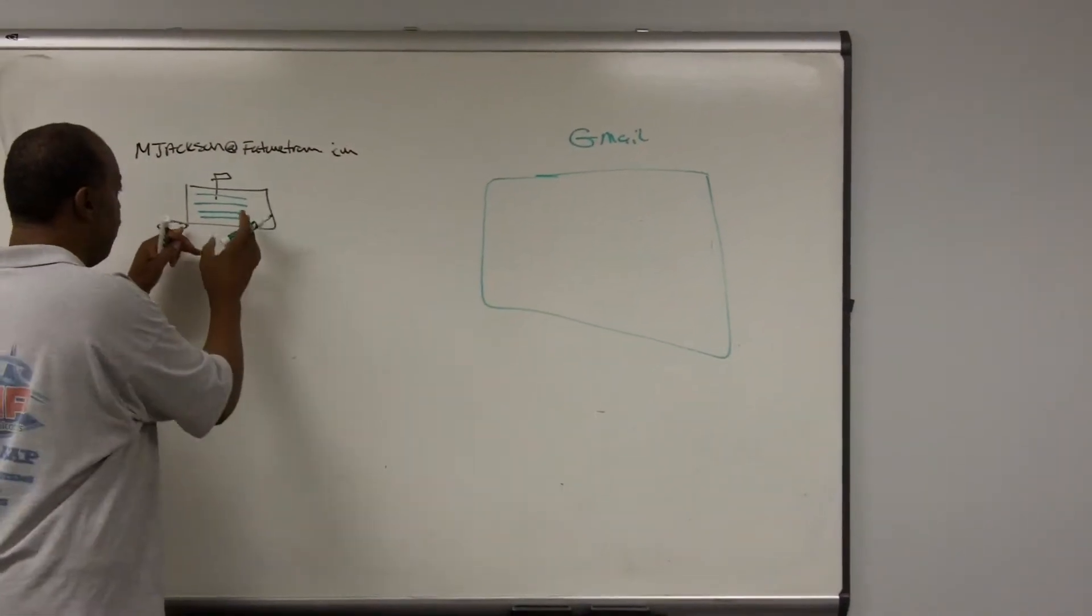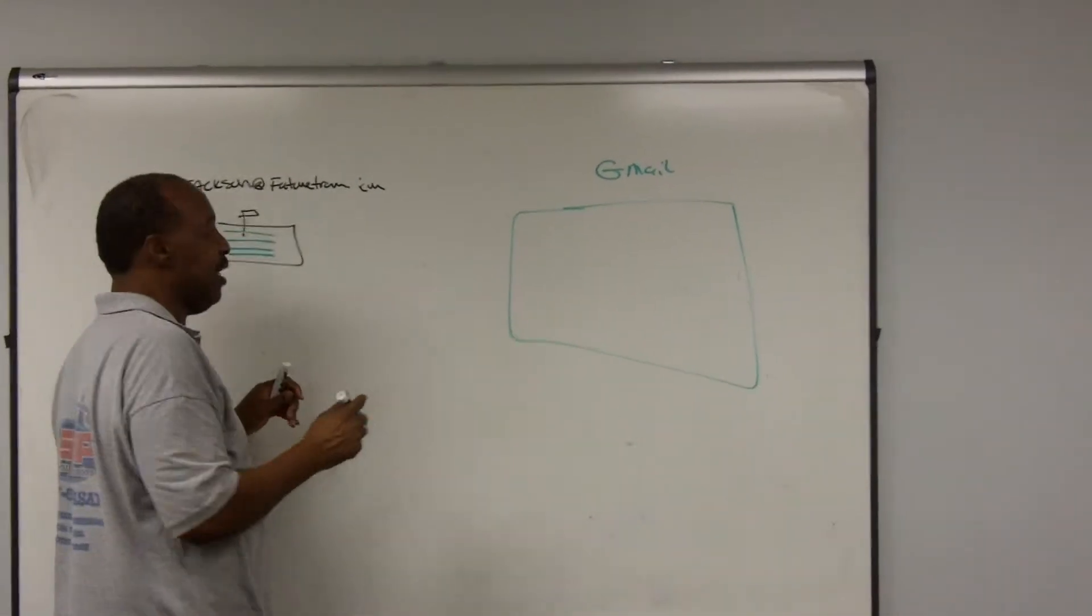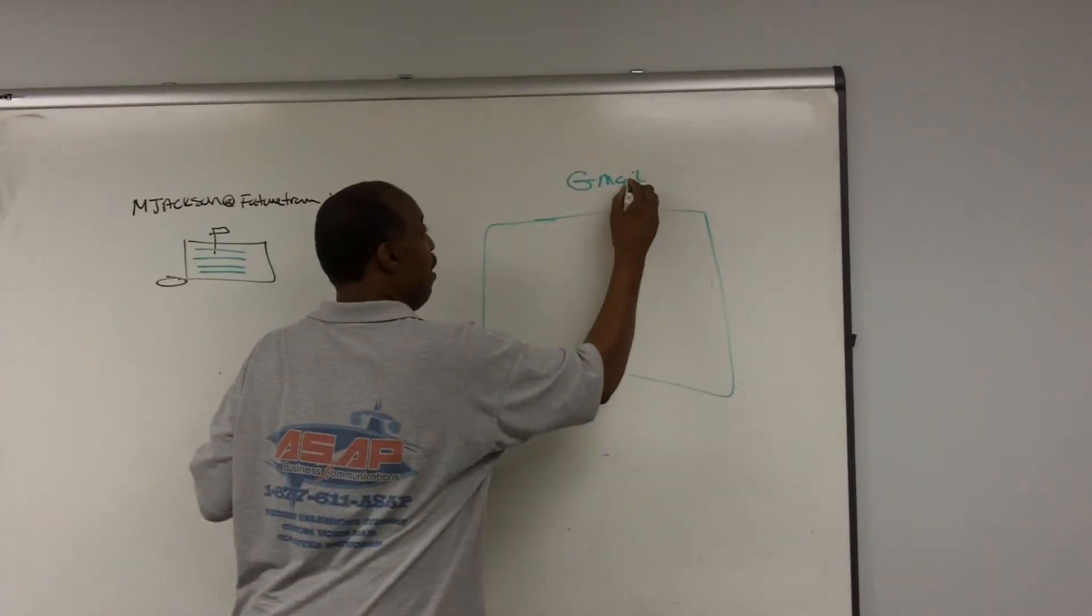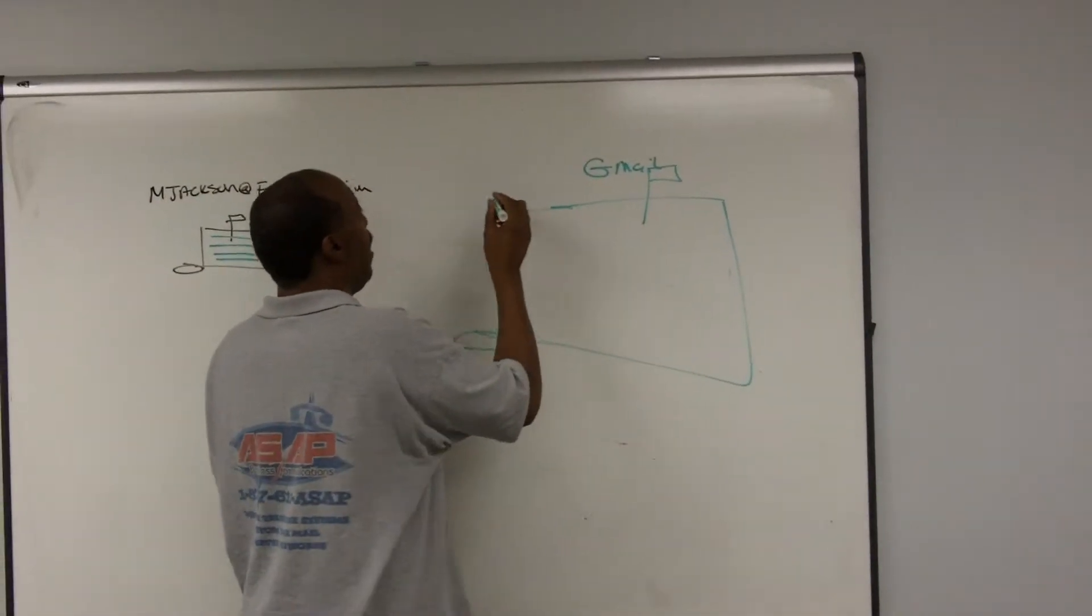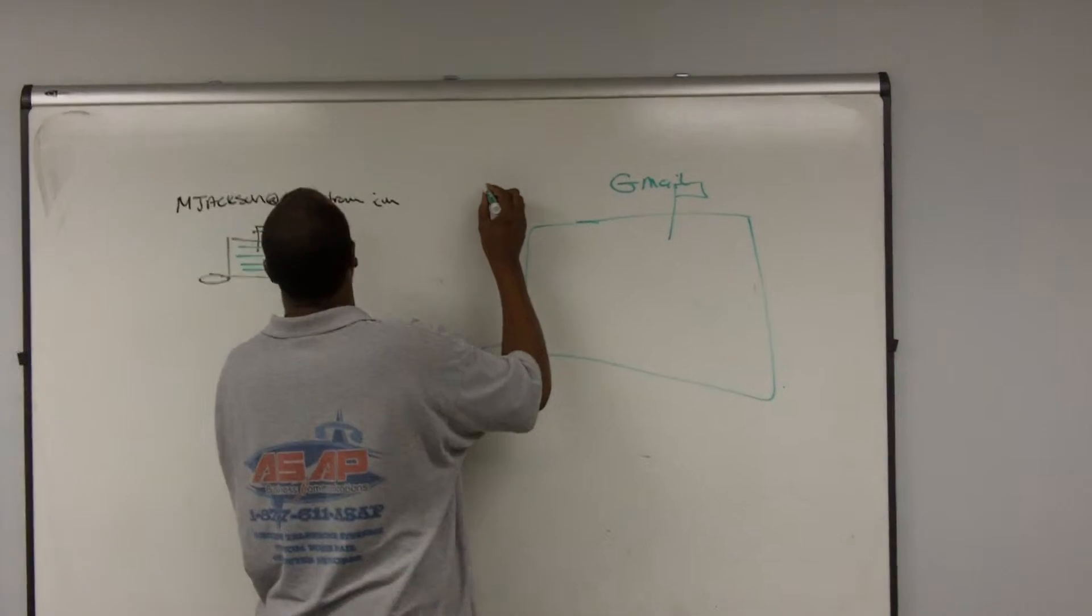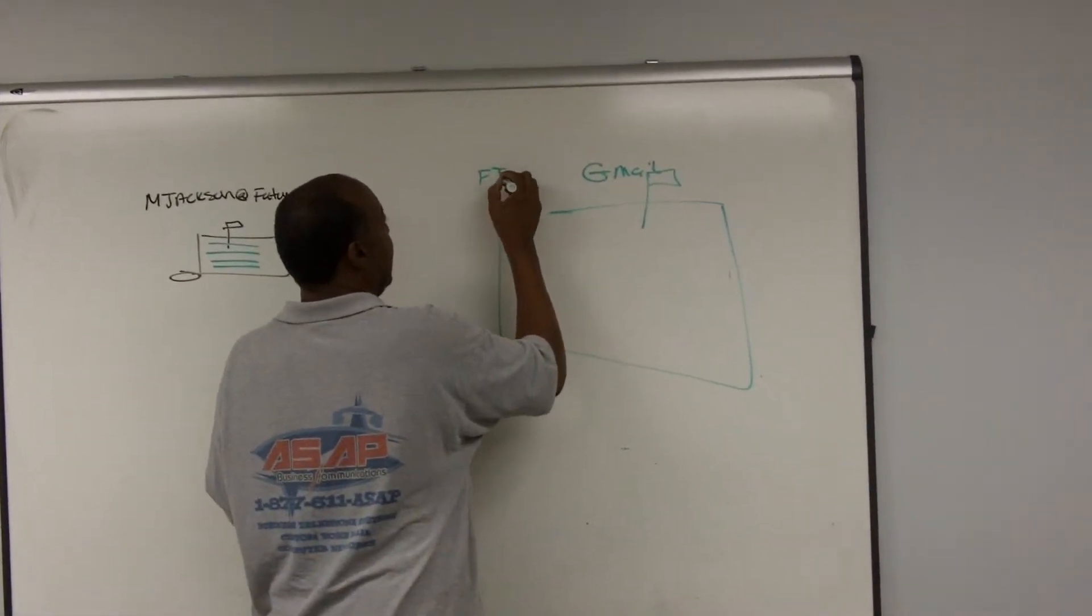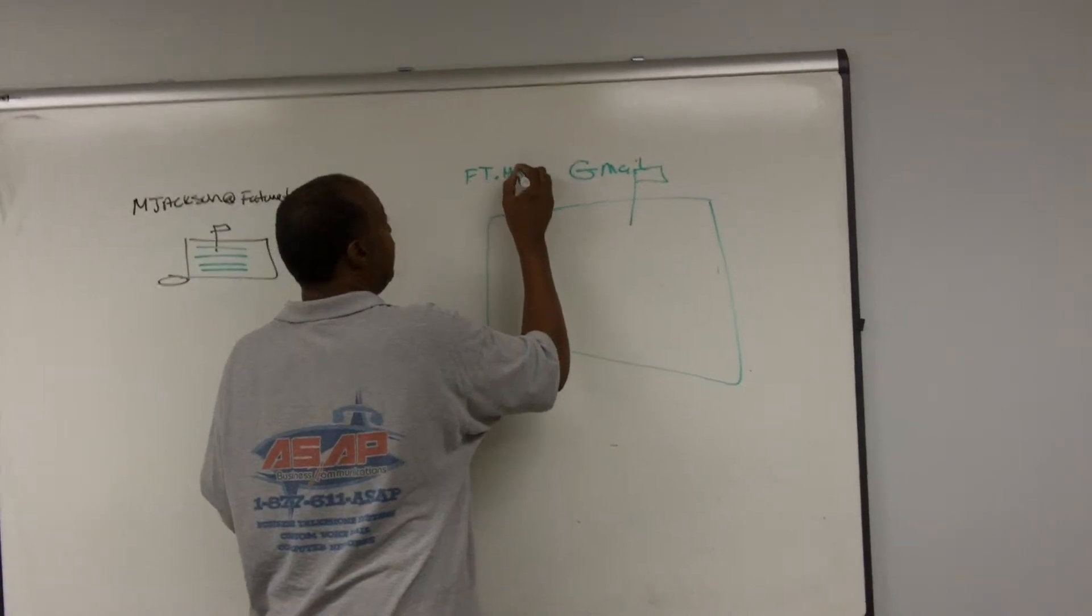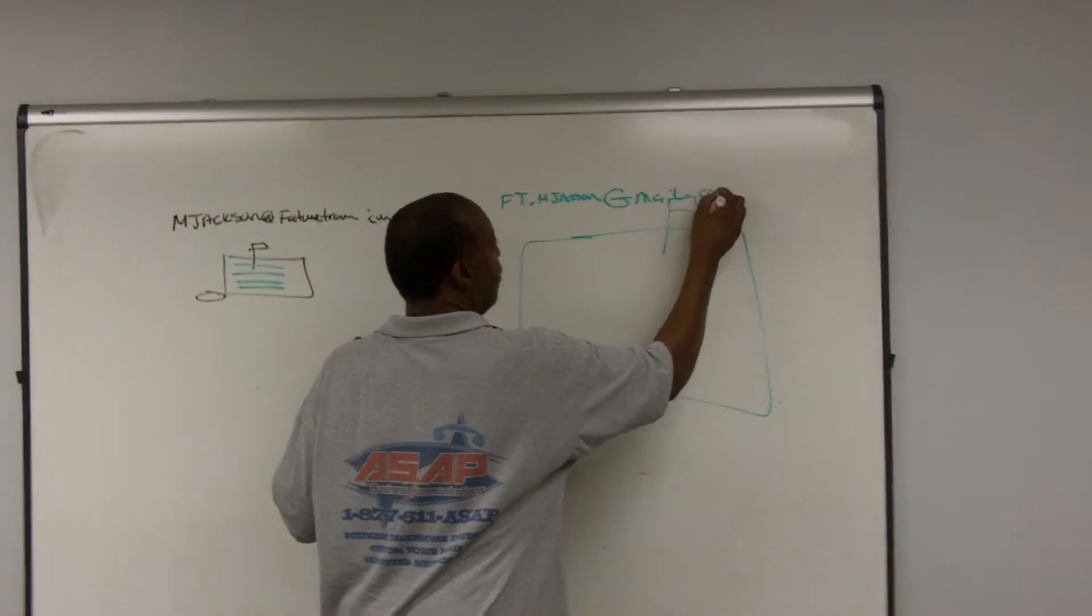We gave you small ones here. Some people, we made them a little bit larger so you can get more messages in there. So what we're doing with the Gmail mailbox is we've given you the email address. If your name is Michael Jackson, it would be ft.mjackson@gmail.com.